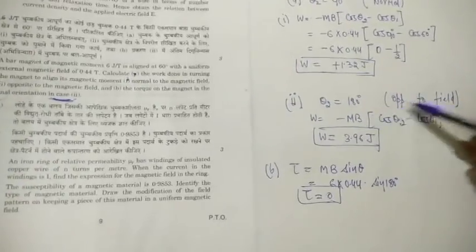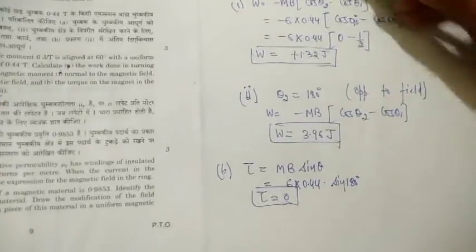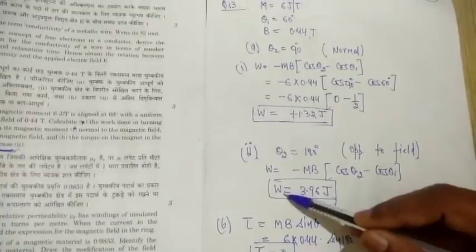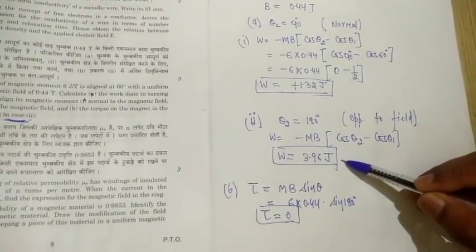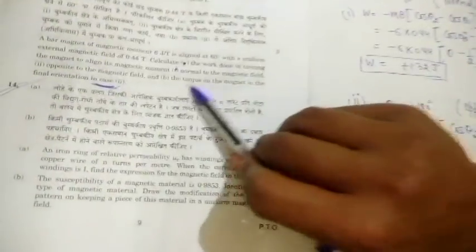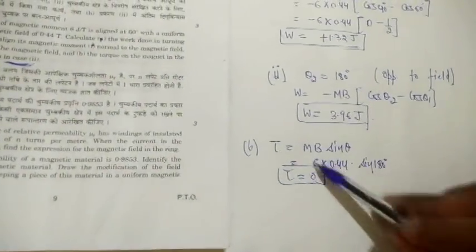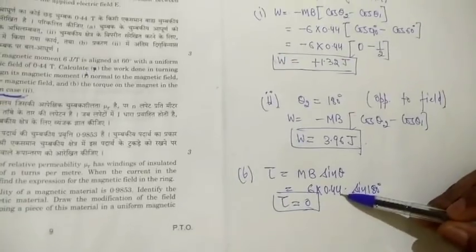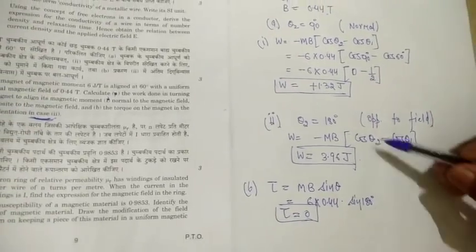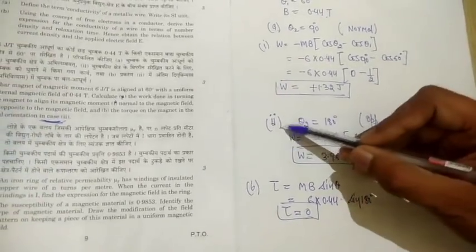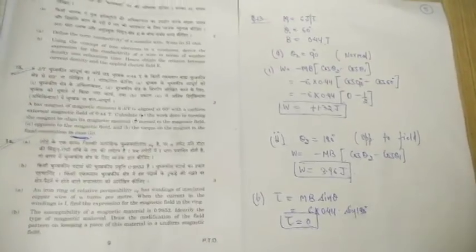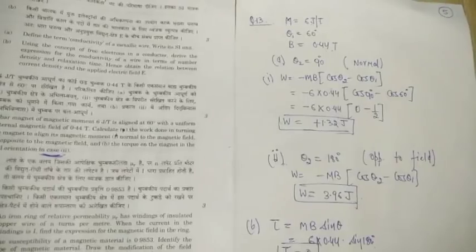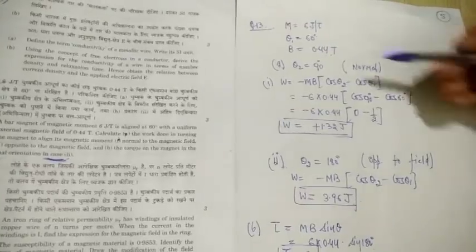For the second part, θ₂ = 180° (opposite to the field). Substituting values gives work done equal to 3.96 joules. For the torque: τ = MB sinθ. With θ₂ = 180°, sin 180° = 0, so the torque is zero.